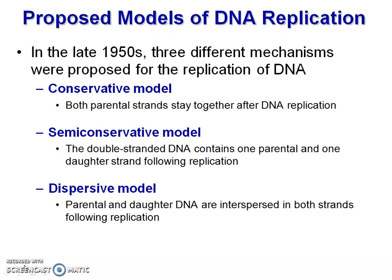There are several models of DNA replication proposed in the late 1950s. Three were considered for experimental purposes. The first is the conservative model, the second is the semi-conservative model, and the third is the dispersive model. In the conservative model, both parental strands stay together after replication, so the new cells get two newly synthesized double helices.